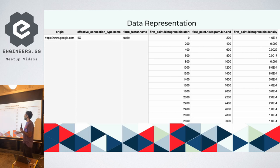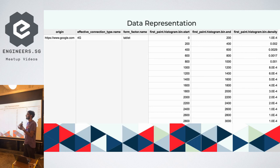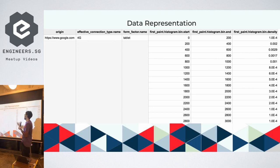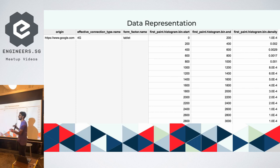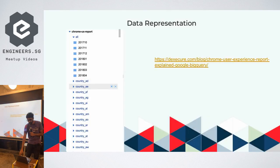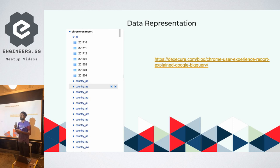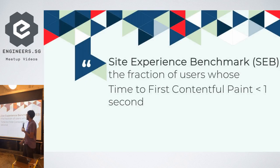The kinds of questions you can ask with this dataset are unique. Since it's anonymized real user monitoring data, you can't ask 'what's the page load time of Google?' Instead you ask things like: 'For google.com, for users on a 4G connection on a tablet, what fraction of users have a page load time within 0–200 milliseconds?' You have to frame questions in terms of fractions of users. If you want to write the BigQuery queries yourself, we've published an interactive blog post on getting started — but in this talk I'll focus on the results.